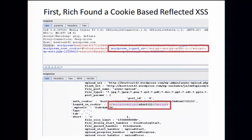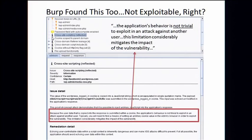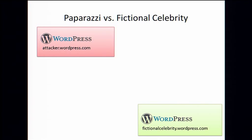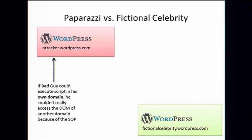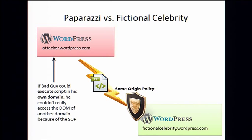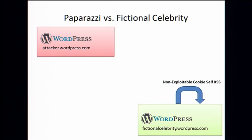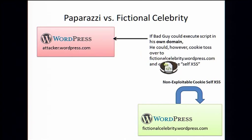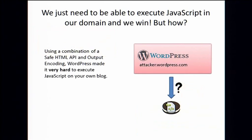I found this WordPress logged-in cookie — it's just 'script alert(1)' and it's echoed in the response plain text. This is as easy a cross-site scripting as it gets but it's in a cookie. Burp found it too just by scanning. Again this was very easy to find, but Burp rated it as informational because it's a cookie and it's hard to exploit. So let's take a step back and look at WordPress.com. If we own attacker.wordpress.com and we want to attack fictional-celebrity.wordpress.com — if we can execute script in our own domain, that doesn't mean we can execute script in fictional-celebrity.wordpress.com. The same origin policy blocks it. So we have this non-exploitable cookie self-XSS, but if we can execute script in our own domain then we can toss the cookie up just like we did with Hotmail and execute script in wordpress.com.